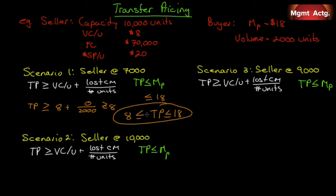If the transfer price is set at $9, the seller does very well because it's only costing $8 — the seller will make $1 per unit times 2,000 units, an extra $2,000 that goes right to the bottom line since fixed costs are still $70,000. From the buyer's perspective at a transfer price of $9, instead of paying $36,000 as they are now, they would only be paying $18,000. So it's significantly in the buyer's best interest, and if it's in both parties' best interest, it's in the organization's best interest overall.